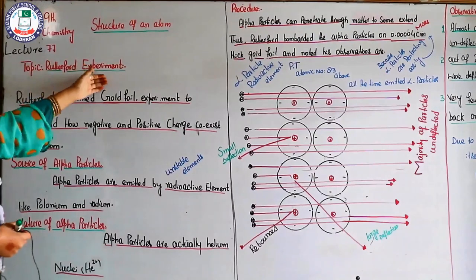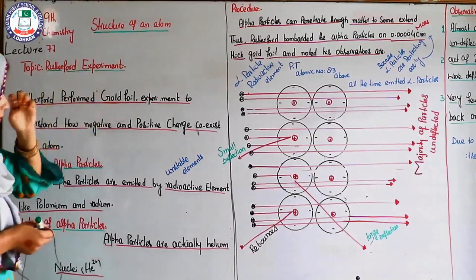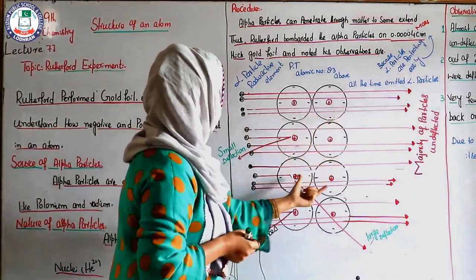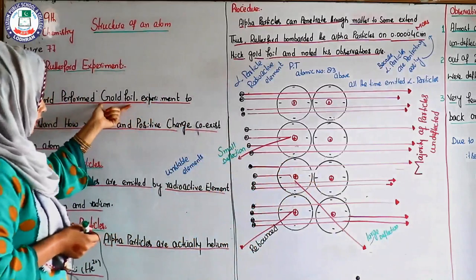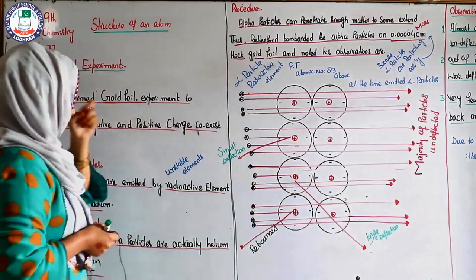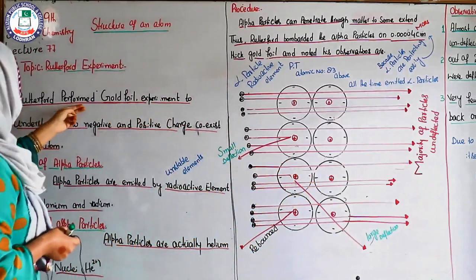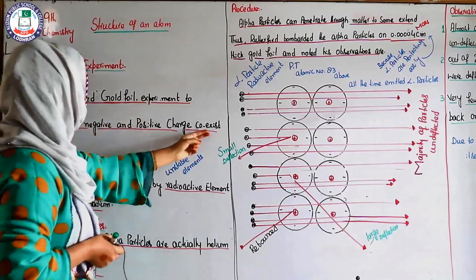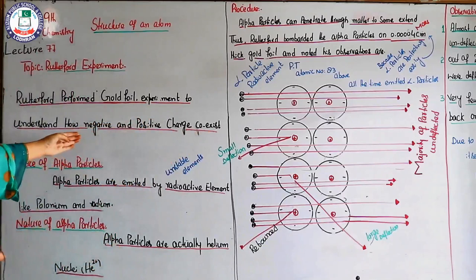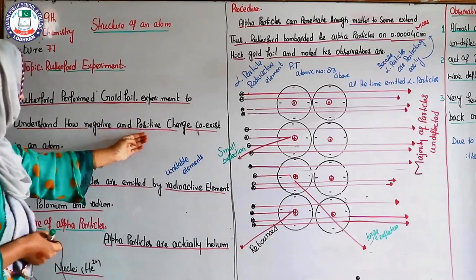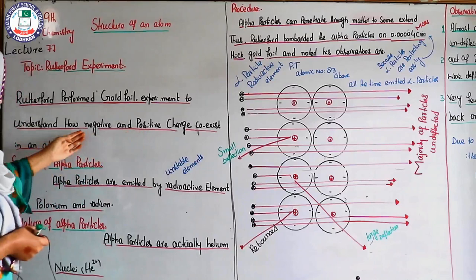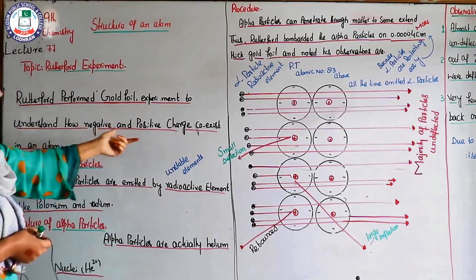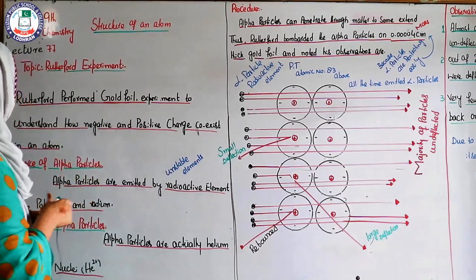Rutherford performed the gold foil experiment to understand how negative and positive charges coexist in an atom. The negative charges are electrons and the positive charges are protons. The electrons are revolving around the nucleus, and protons are present in the nucleus of an atom.